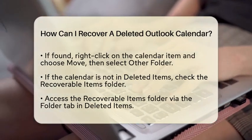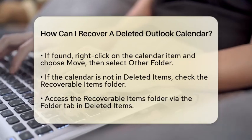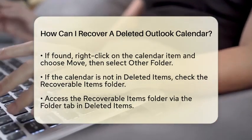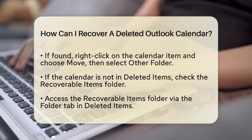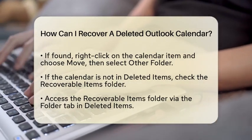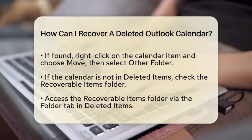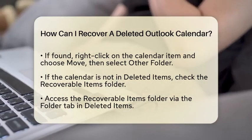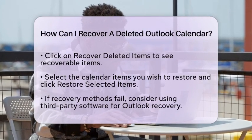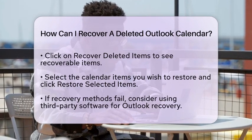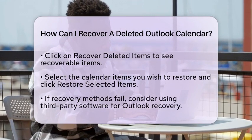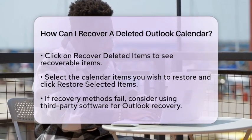If your calendar is not in the deleted items folder, it may be in the recoverable items folder. This folder is a hidden area for items that have been permanently deleted or removed from the deleted items folder. To access this folder, go back to the deleted items folder. Look for the folder tab at the top of the screen and click on Recover deleted items. A window will pop up showing the items you can recover. Select the calendar items you want to restore and click Restore selected items. This will move them back to your calendar folder.